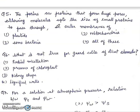Question 5: Porins are proteins that form huge pores, allowing molecules up to the size of small proteins to pass through in outer membranes of: First, plastid, second mitochondria, third, some bacteria and fourth, all of these. Right answer will be fourth, all of these.